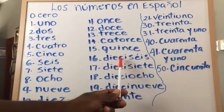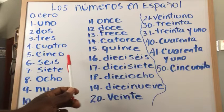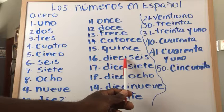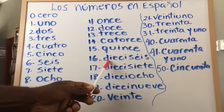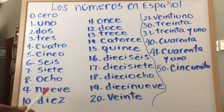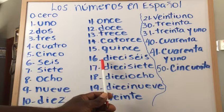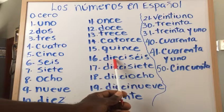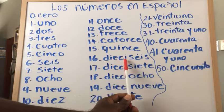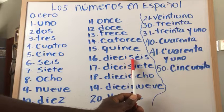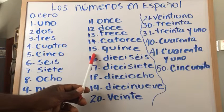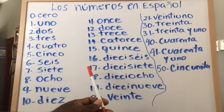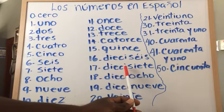Pay attention here — 'dieciséis' is 10 and 6. The number 10 and the number 6. So 'dieciséis' is just a spelling change — here you write it a little differently, with the 'i' in the middle, and then the number 6. So 10 and 6. The same with 17: 'diecisiete.'